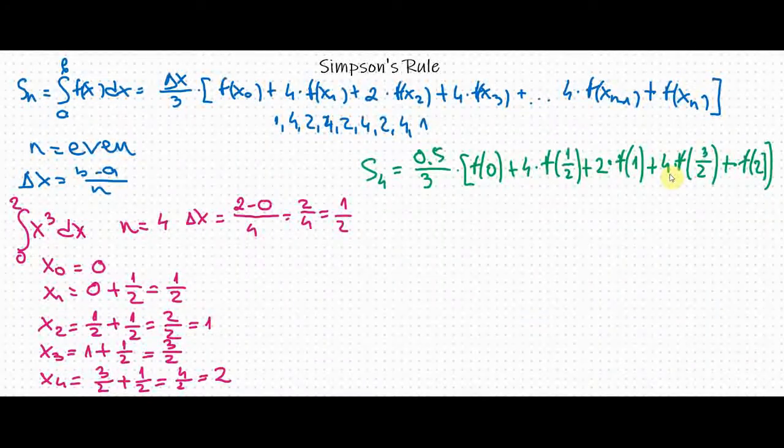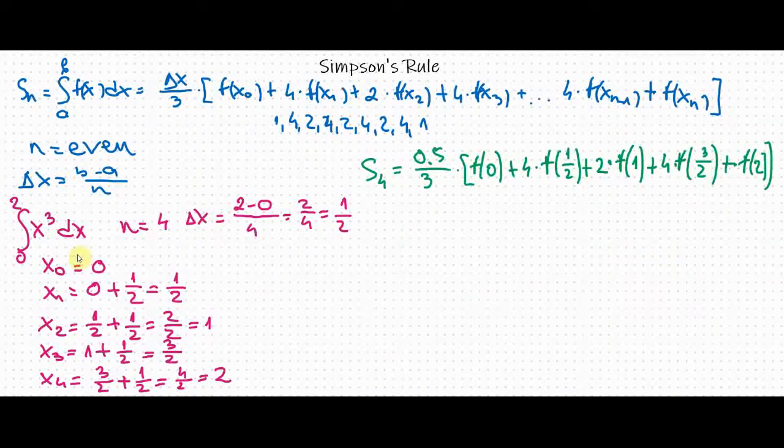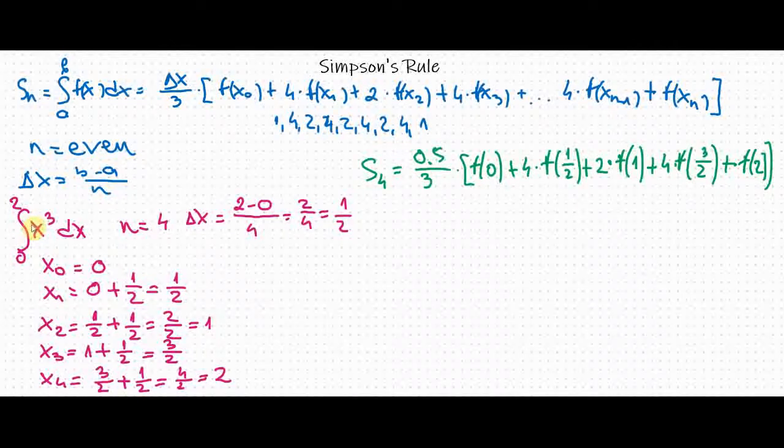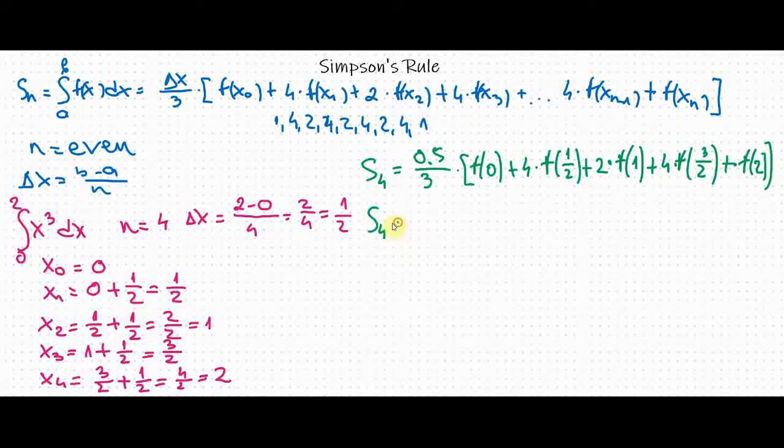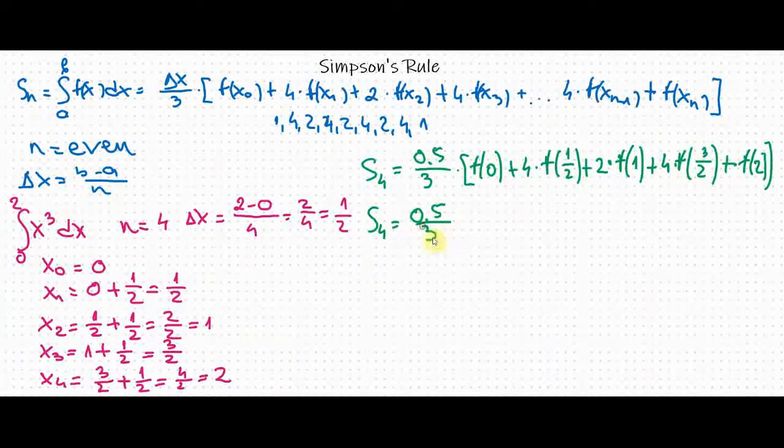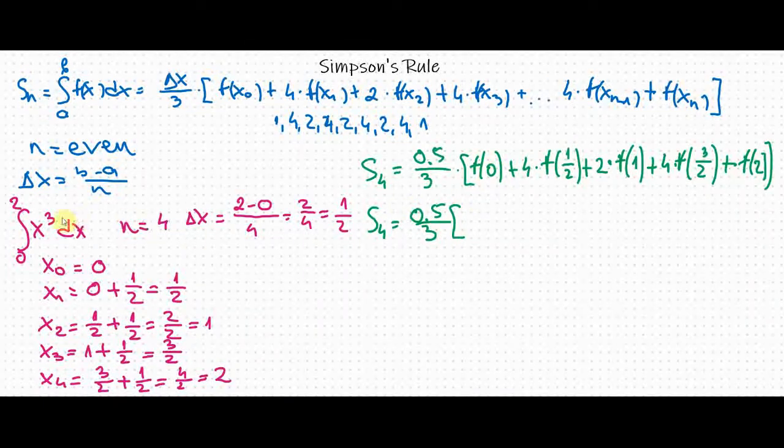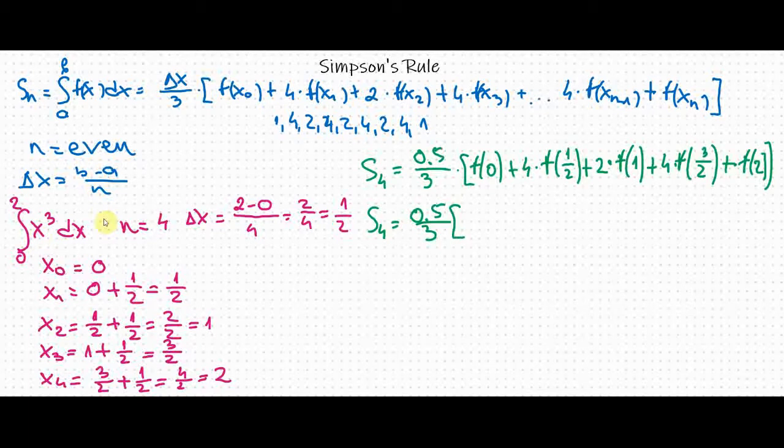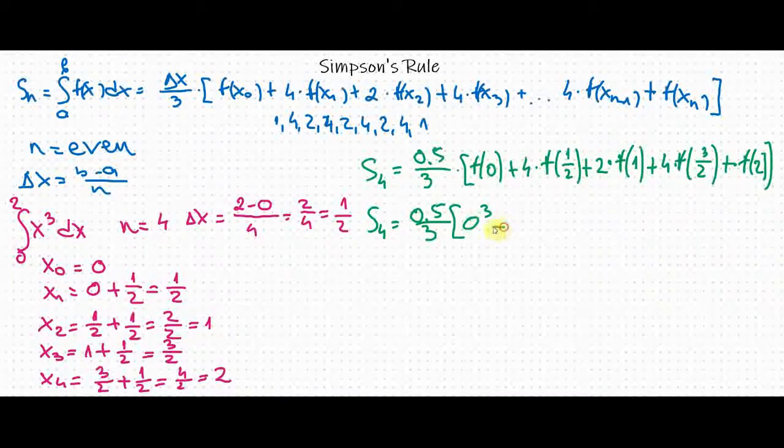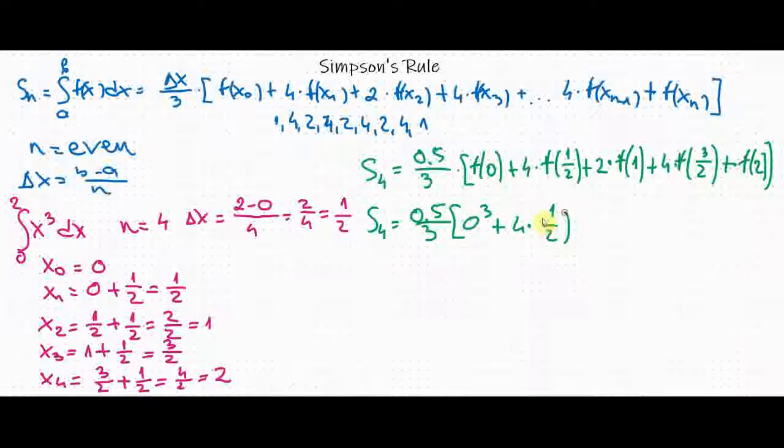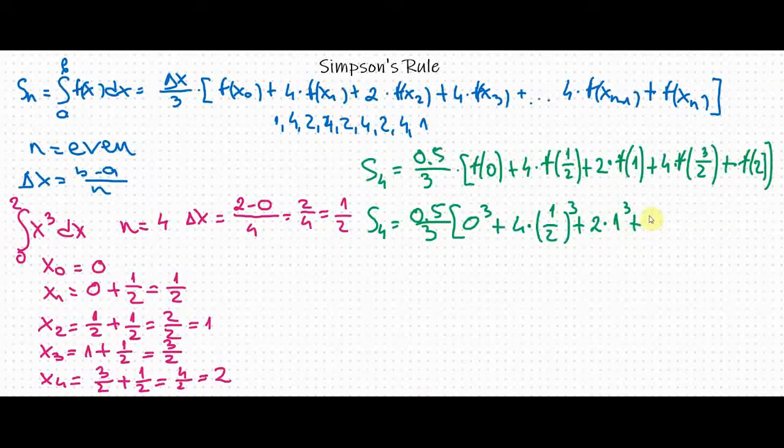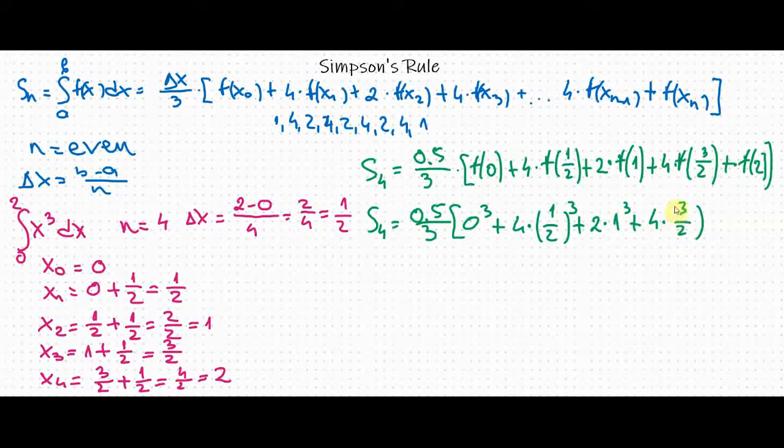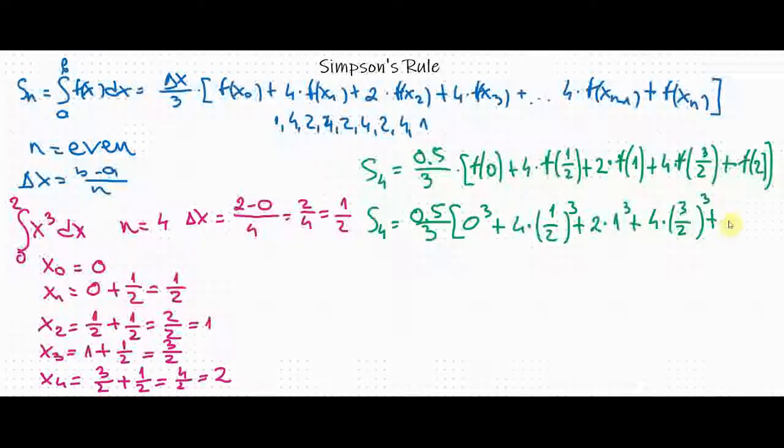Now we look at our definite integral and we can see that f of x is x cubed. What we do next is plug the numbers in place of x. So we have s sub 4 equals 0.5 over 3, and now we have 0 cubed plus 4 times 1 half cubed plus 2 times 1 cubed plus 4 times 3 over 2 cubed plus 2 cubed.